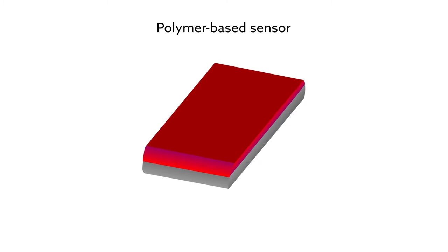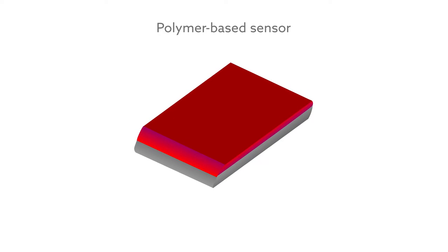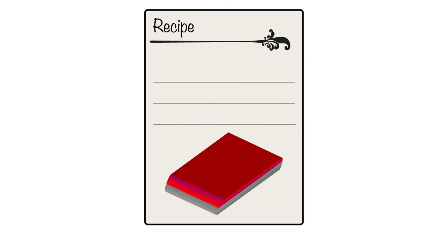Although polymer-based sensors are in many ways easier to fabricate than their more rigid inorganic counterparts, the typical recipe for building this type of sensor still calls for highly specialized equipment and can be rather costly and time-consuming.